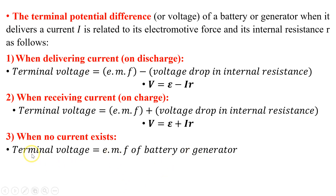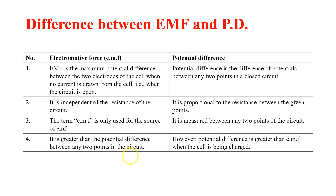When no current exists, we can say the terminal voltage is equal to the electromotive force of the generator or battery. In simple words, when there is no current, the voltage becomes equal to the electromotive force.